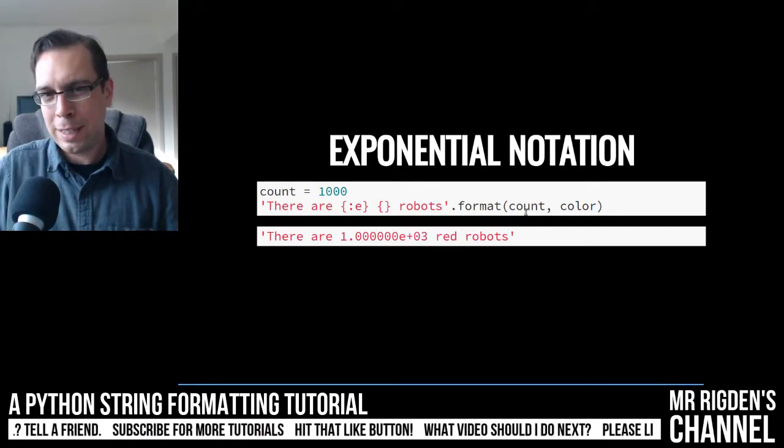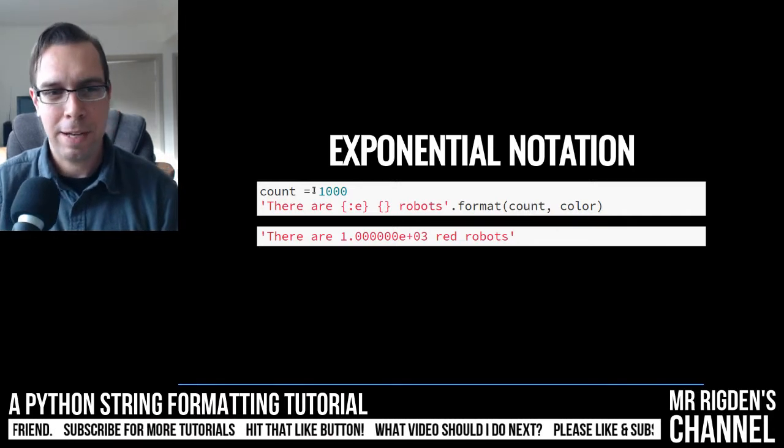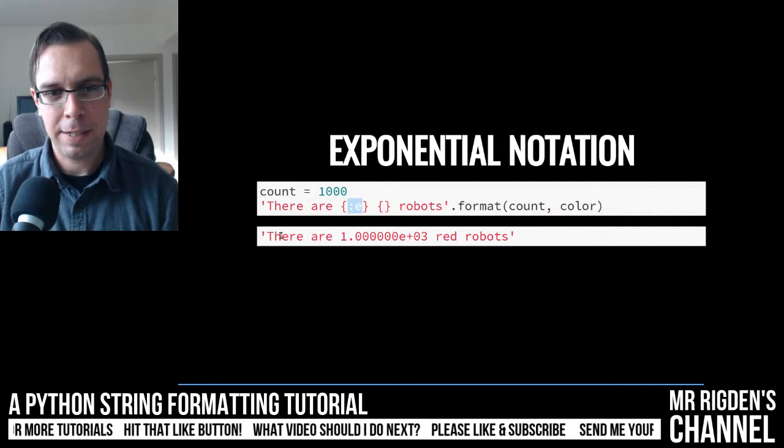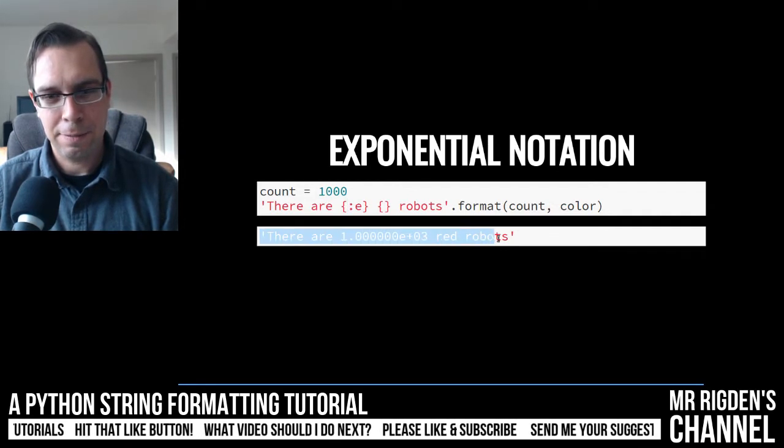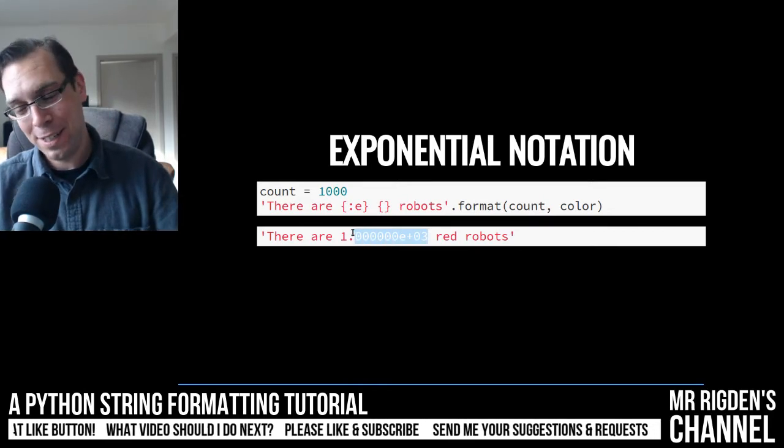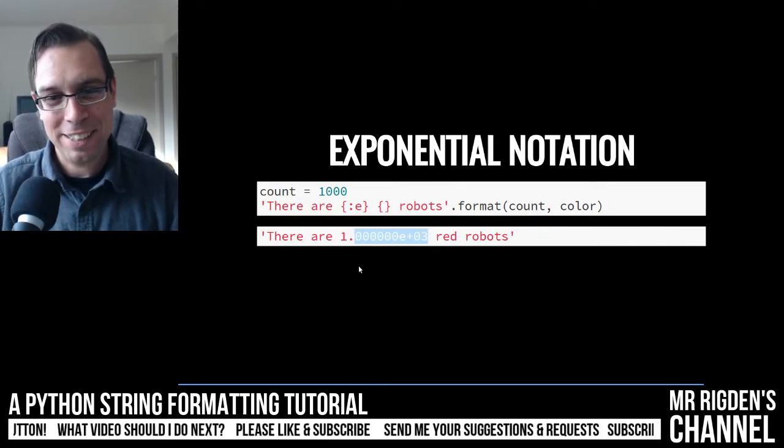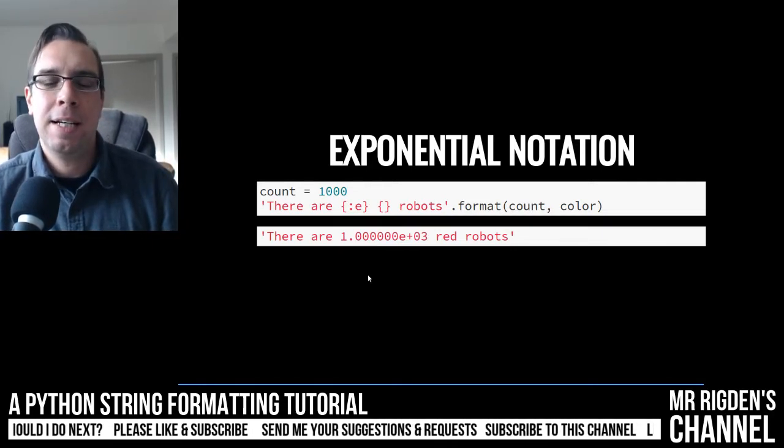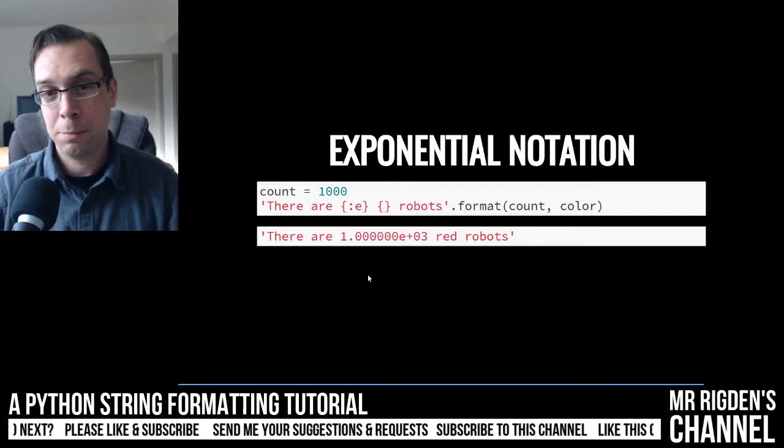It can also show exponential notation. So we have a thousand here and with little E we can specify and then it'll print out this. Oh, very annoying. I don't really like the exponential notation. So maybe that's just me, but I suppose it will be very useful if you're using very, very, very large numbers in your Python program.